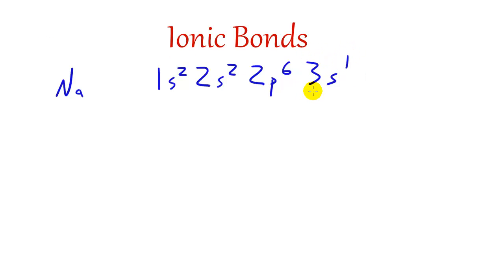For valence electrons, remember, it's how many electrons are in the outermost energy level. It has one valence electron. Its outermost energy level is energy level 3, and in that energy level it has one valence electron.